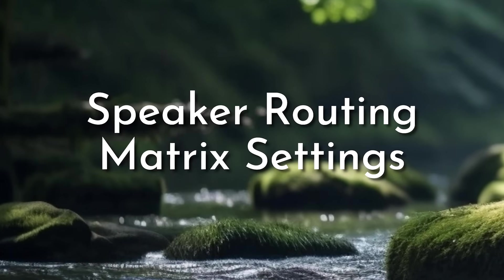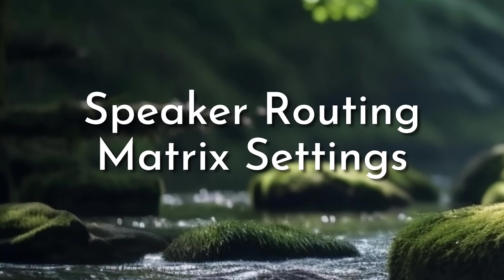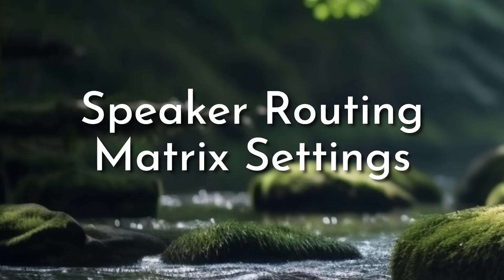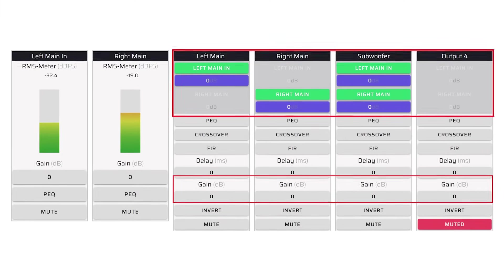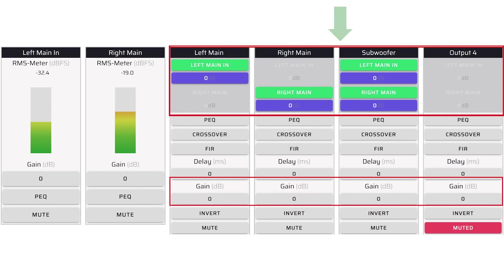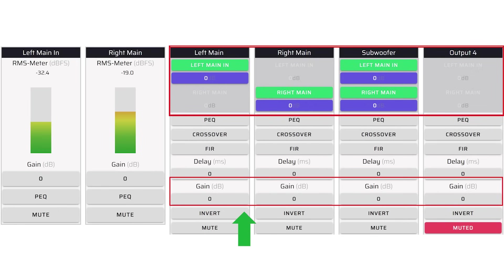Using MiniDSP Device Console, you will configure the routing matrix, crossovers, relative levels, and delay settings for your system. For a 2.1 system, your subwoofer will need to be driven in mono using output channel 3. Typically, channel 1 is used for left and channel 2 is used for right full-range speakers. You also have the opportunity in the routing matrix to adjust relative channel levels, as shown in the highlighted boxes.